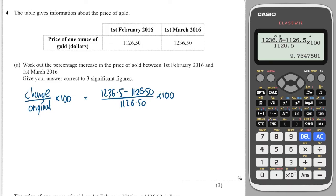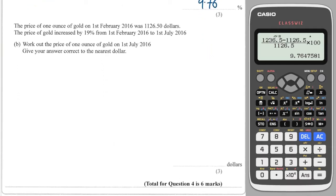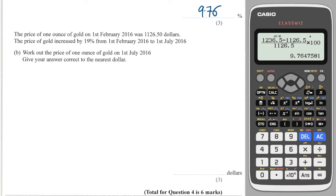Okay, next part says the price of one ounce of gold on February 2016 was that amount. The price of gold increased by 19% from the 1st of February to the 1st of July. Work out the price of one ounce of gold on the 1st of July. So a 19% increase means that I take